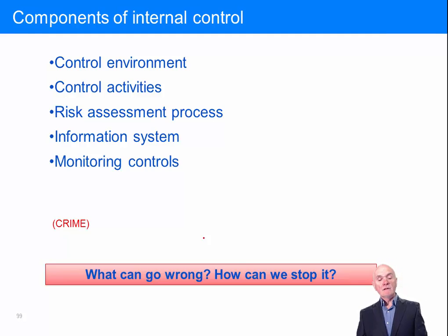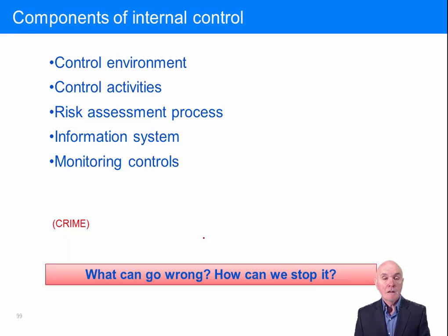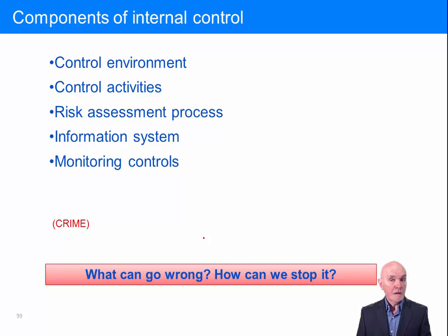What are the components of internal control? You need to know these five components. First of all, there is something called the control environment, and we did mention this very briefly earlier.